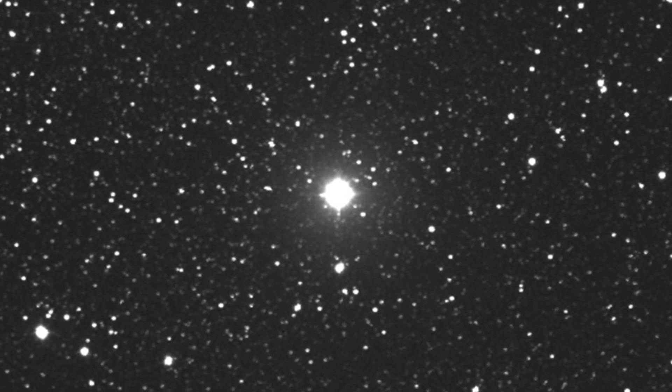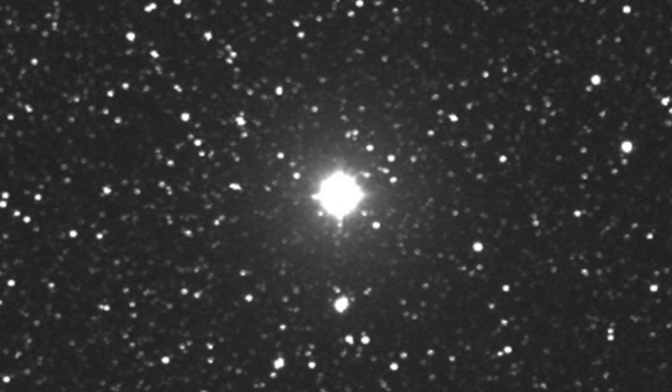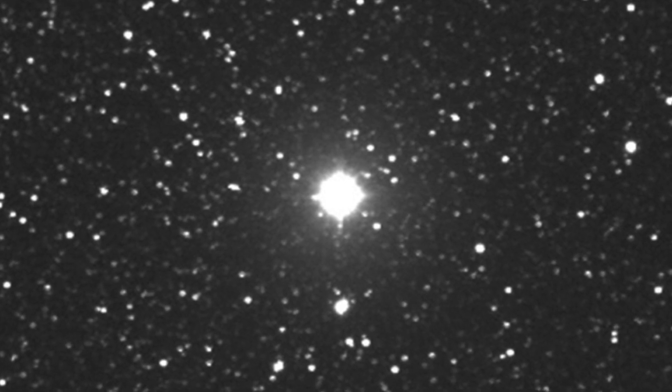But what causes these eruptions? First, it's important to know that RS Ophiuchi is a white dwarf binary star. Because it is a binary star, it is in close orbit with another star. In this case, the other star is a large red giant. As the two stars spin around each other, hydrogen is drawn off the giant star by the smaller dwarf star.